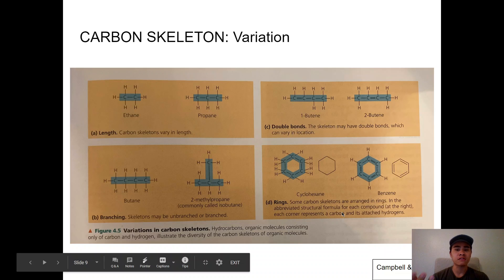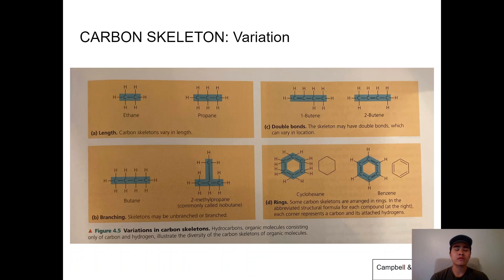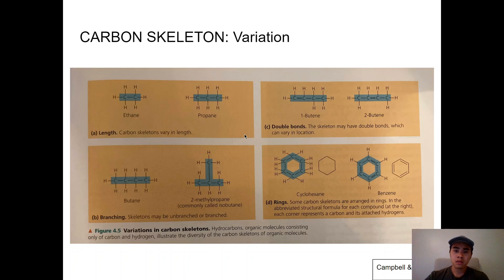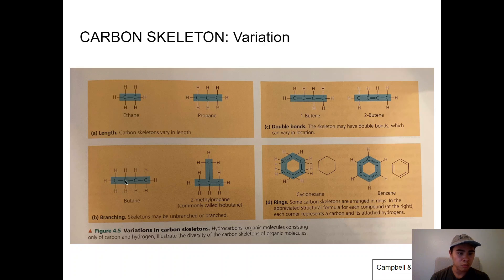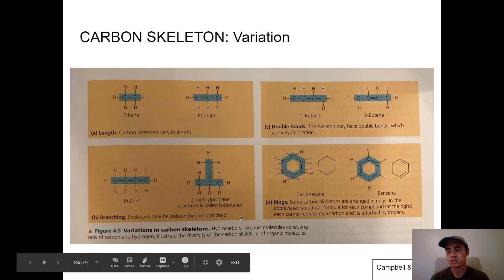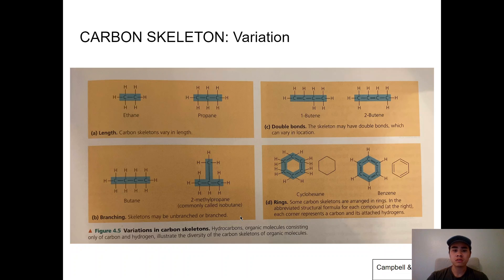Carbon skeletons lead to great variety. For example, if you have two carbons with hydrogens attached, that's ethane. Add one carbon and you have propane. Add another and you have butane. If you rearrange one of those carbons to attach to the middle carbon, now you have two-methylpropane, also called isobutane. All you're doing is adding or moving a carbon, yet the uses are completely different.